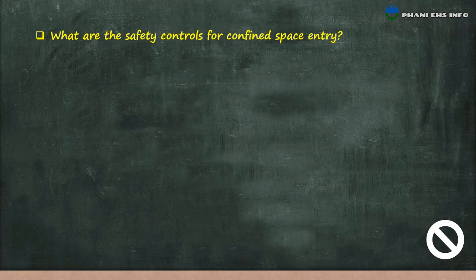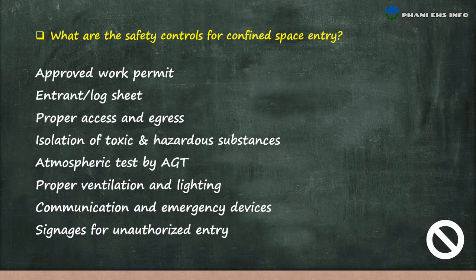What are the safety controls for confined space entry? Approved work permit; entrant log sheet; proper access and egress; isolation of toxic and hazardous substances; atmospheric test by gas detector; proper ventilation and lighting; communication and emergency devices; and signage for unauthorized entry.